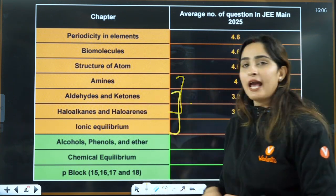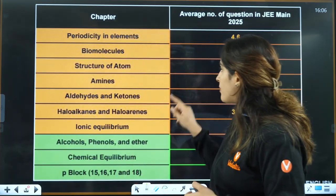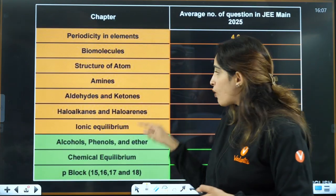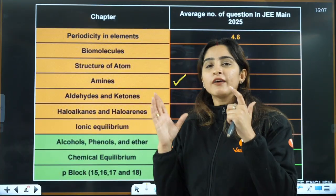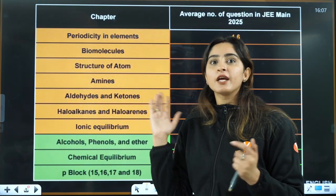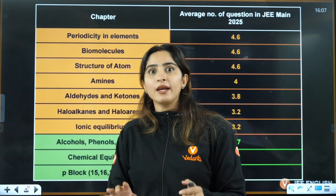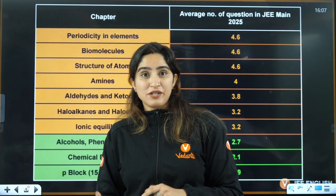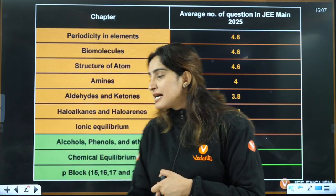For amines, aldehyde ketones, and haloalkanes/haloarenes: from amines, don't skip any naming reaction or distinguish test — basicity is also asked. From aldehyde ketones, very important topics include aldol condensation and Cannizzaro reaction. From haloalkanes and haloarenes, SN1 and SN2 are very important. From ionic equilibrium, pH-related questions, buffer solutions, solubility product, and salt hydrolysis are important.